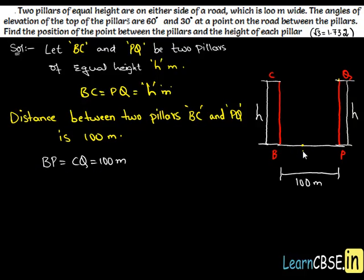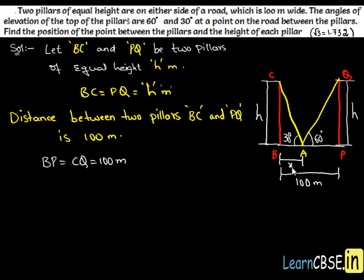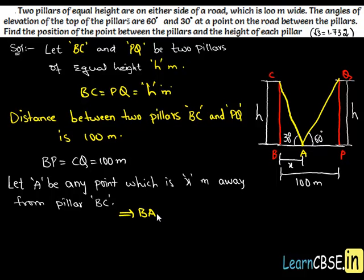Now consider a point A in between the two pillars. The angle of elevation of the top of the pillars from this point is 60 degrees and 30 degrees. Let angle CAB be 30 degrees and angle QAP be 60 degrees. We assume the distance of point A from pillar BC is X meters, so BA is X meters. Since the total length is 100 meters, the distance of point A from pillar PQ is 100 minus X meters.